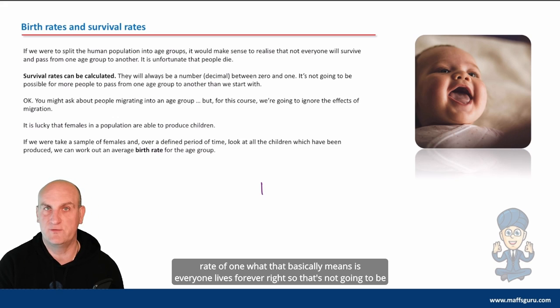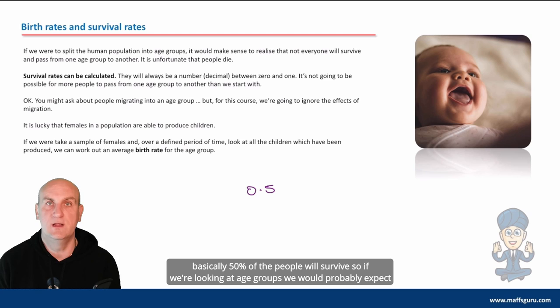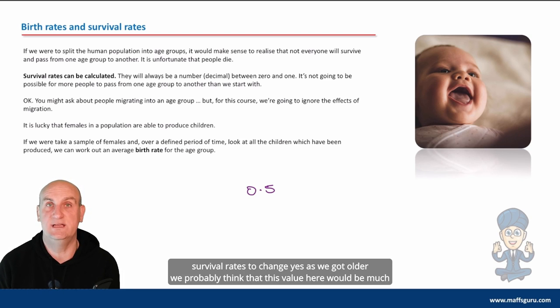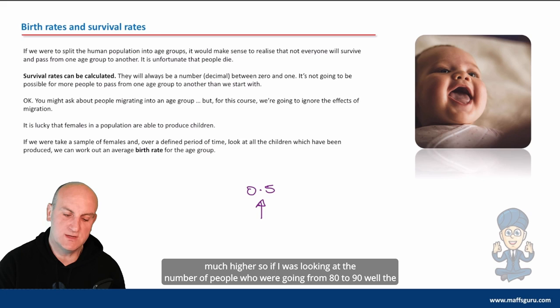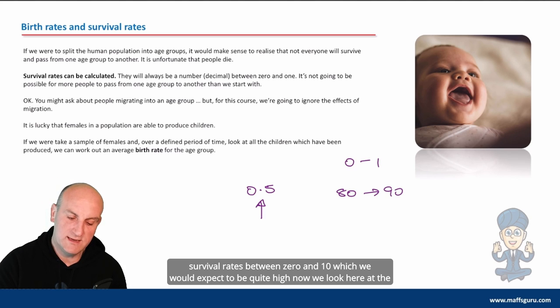Now survival rates can be calculated, and it's going to be a value less than one. Now if we had a survival rate of one, what that basically means is everyone lives forever. That's not going to be useful to me, and that's probably not realistic. If I have a survival rate of 0.5, it means that basically 50% of the people will survive. So if we're looking at age groups, we would probably expect survival rates to change. As we got older, we'd probably think that this value here would be much higher. So if I was looking at the number of people who are going from 80 to 90, the chances are a much higher percentage of people would be passing away there than if I look to the survival rates between 0 and 10, which we would expect to be quite high.